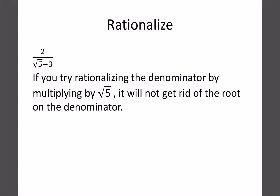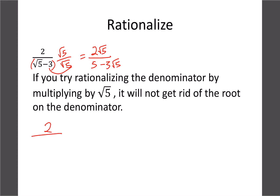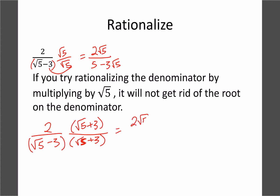The challenging cases happen when there's adding or subtracting in the denominator. If we multiply by just root 5, the top gives 2√5, but the bottom when foiled gives root 5 times root 5 (which is 5) plus a negative 3√5 term — the root doesn't cancel. So we have to multiply by the conjugate, which is the same expression but with the opposite sign. We foil top and bottom: the top gives 2√5 plus 6, and the middle terms on the bottom cancel.